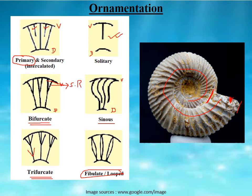When primary ribs divide into two or three segments, those divided portions are known as secondary radial elements or secondary ribs. For example, primary ribs may reach the middle part of the flank and divide into two secondary ribs, or divide into three secondary ribs. After dividing, the rest of the portion is secondary ribs; on the opposite side these secondary ribs converge and continue again as primary ribs.